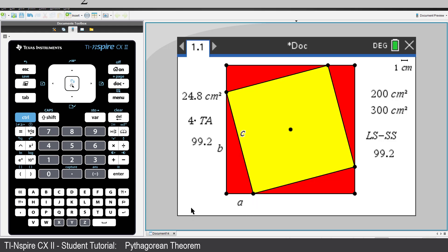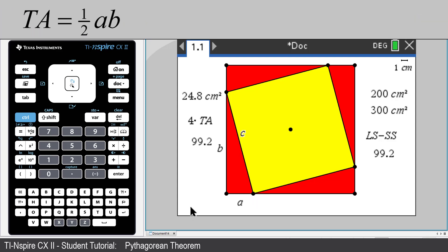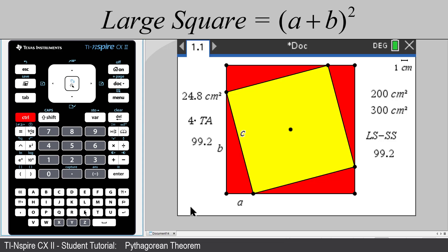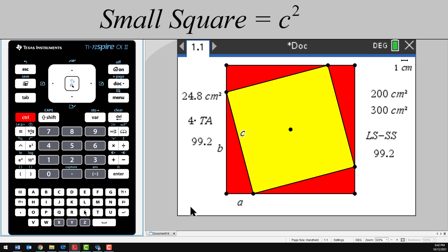The total area of our four triangles would be equal to 2ab. The area of the large square is a plus b all squared. And the area of the smaller square is just c squared. Which, with a bit of simplification, leaves us with the familiar formula a squared plus b squared equals c squared.